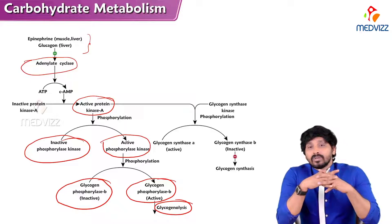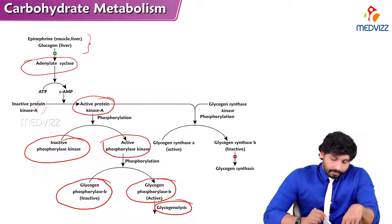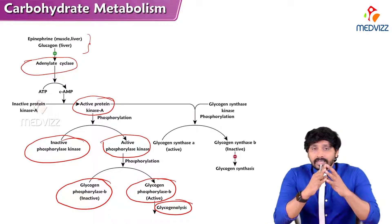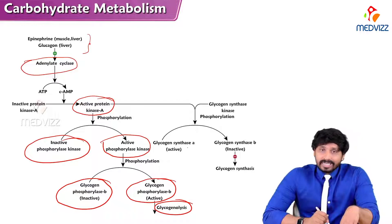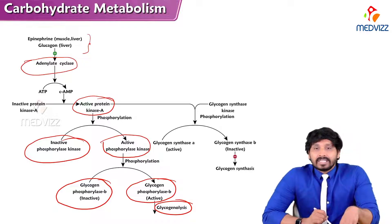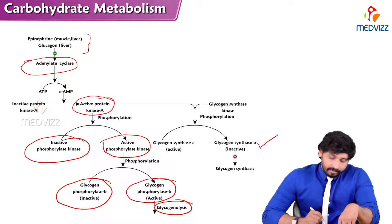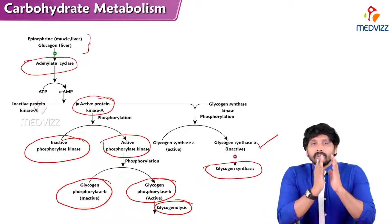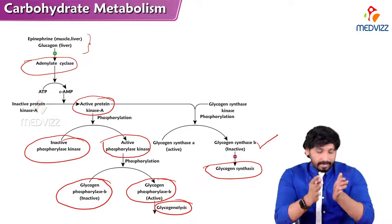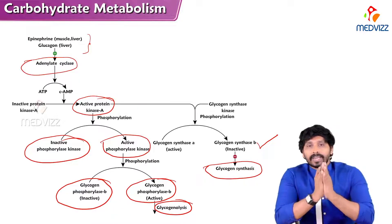On the other side, when protein kinase A is active, it also phosphorylates glycogen synthase. Since glycogen synthase is active in its dephosphorylated form, adding a phosphate group makes it inactive and blocks glycogen synthesis. So in starvation — when energy is required — this hormonal mechanism simultaneously activates glycogen breakdown and blocks glycogen synthesis.